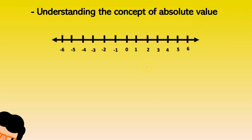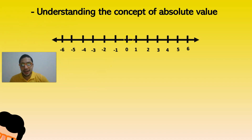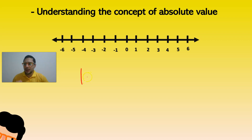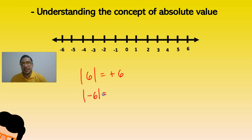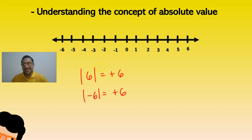Now, to understand the concept of absolute value is usually pretty simple. You just have to remember that the absolute value of a number, positive or negative, the outcome is still going to be positive. So the absolute value of 6 is going to be plus 6, and the absolute value of minus 6 is going to still be plus 6. It doesn't matter if the number is positive or negative — the absolute value is always going to be positive.